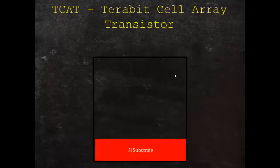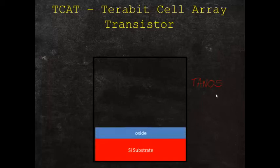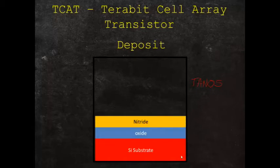The next technology we'll talk about is TCAT, the Terabit Cell Array Transistor. This was developed by Samsung and Hynix, and they use what's called a tantalum alumina nitride oxide system, the TANOS system, and it forms the basis of the TCAT array transistor. In this construction, your CMOS logic is laid down at the bottom.